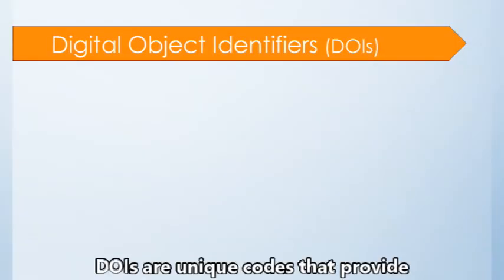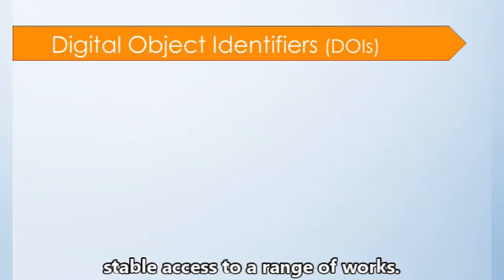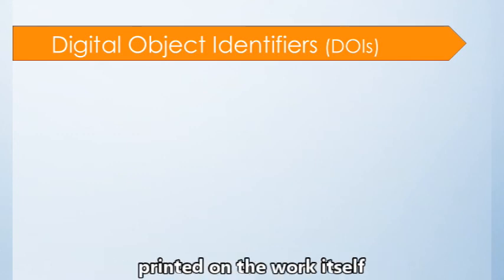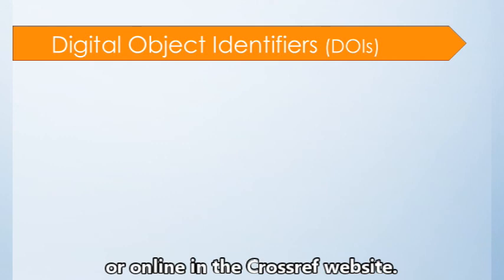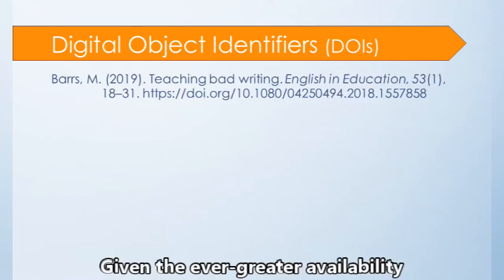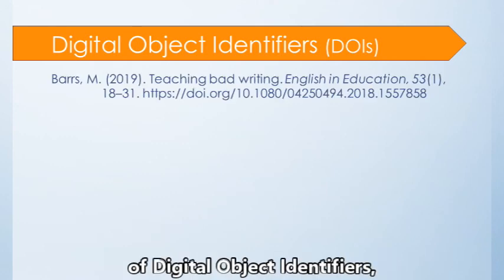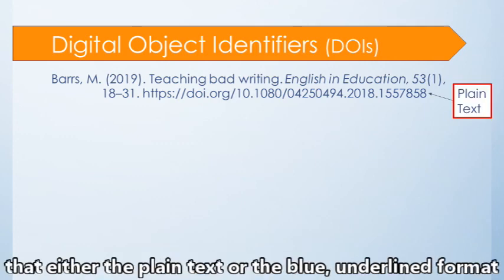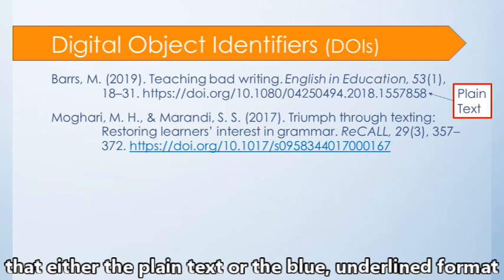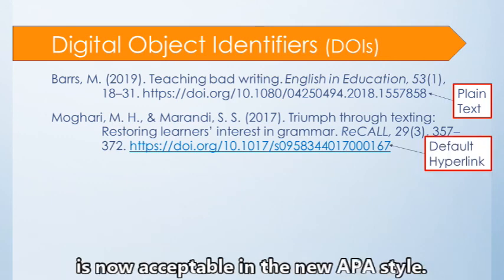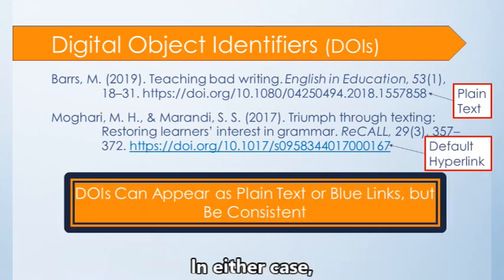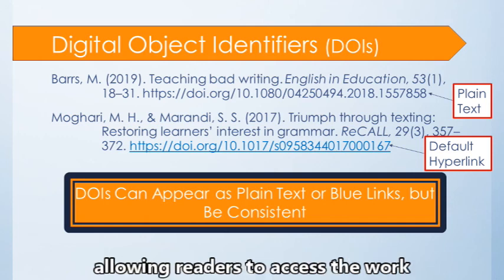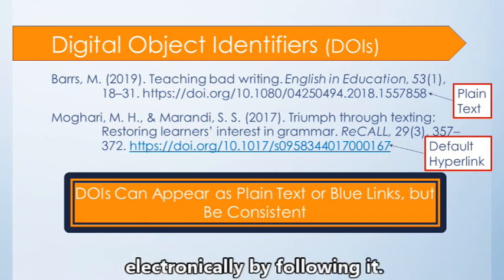DOIs are unique codes that provide stable access to a range of works. They can frequently be found either printed on the work itself or online at the CrossRef website. Given the ever greater availability of digital object identifiers, remember that either the plain text or the blue underlined format is now acceptable in the new APA style. In either case, the link should be live, allowing readers to access the work electronically by following it.